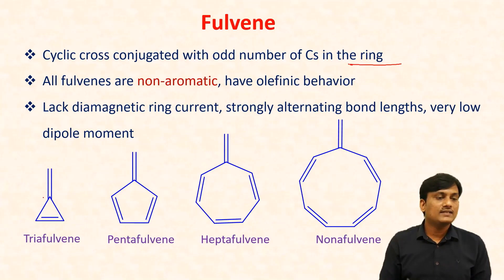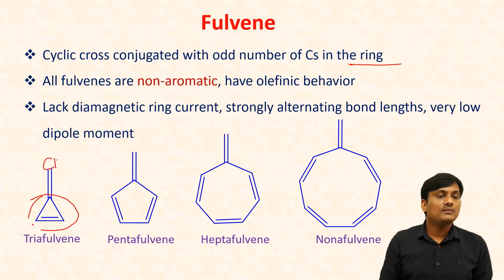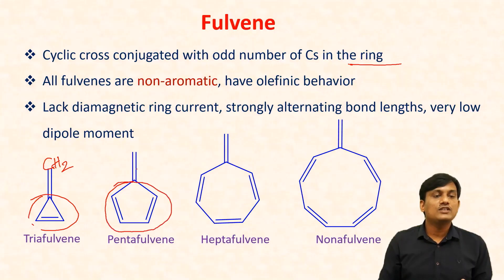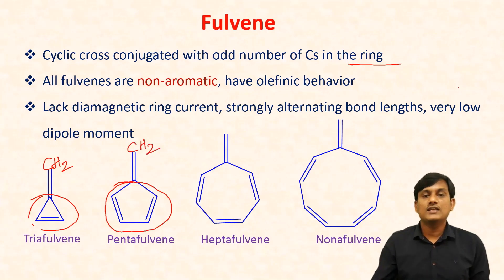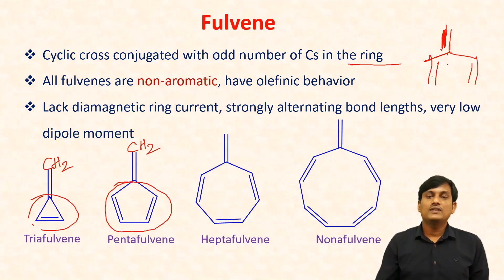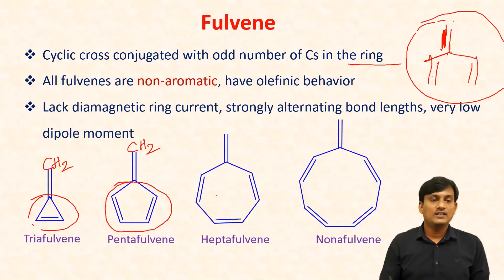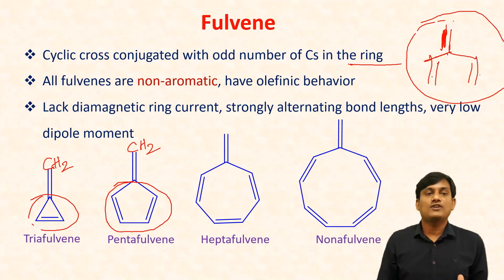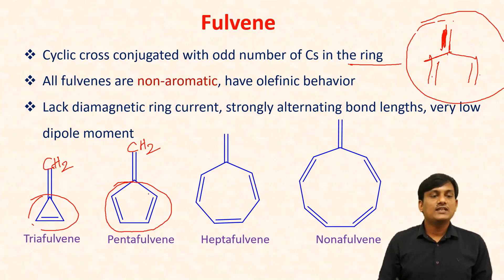In fulvenes, the ring has an odd number of carbons, and the ring is in cross-conjugation with a methylene group (CH₂ group). Cross-conjugation means one double bond is in conjugation with two other double bonds simultaneously. In fulvenes, there is cross-conjugation between a ring having an odd number of carbons and methylene groups. All fulvenes are non-aromatic.